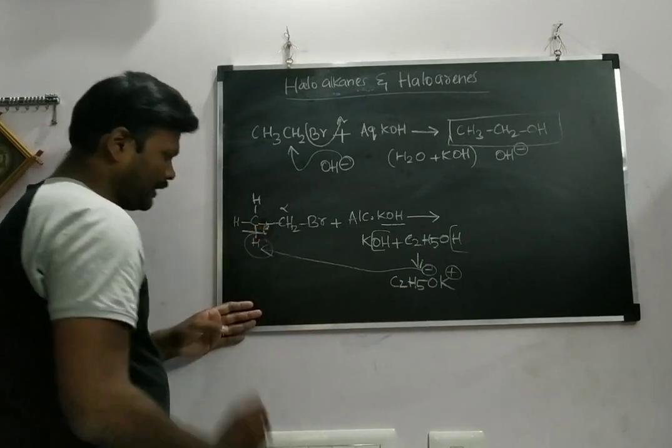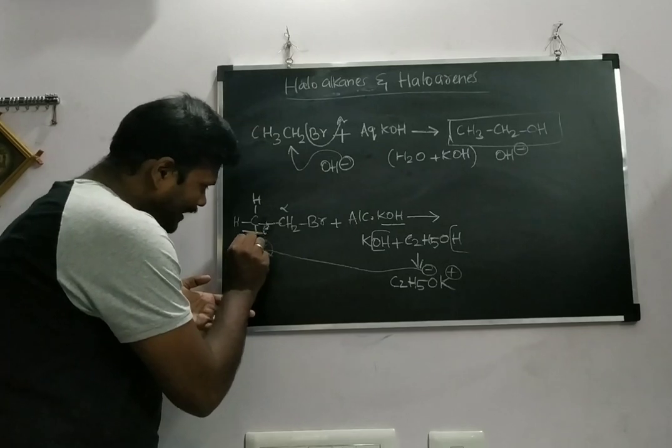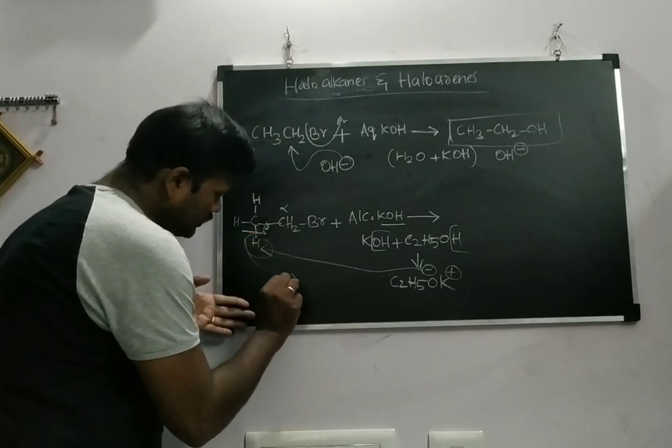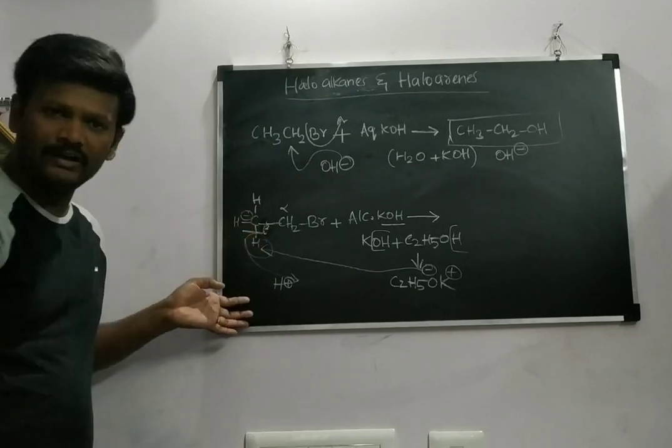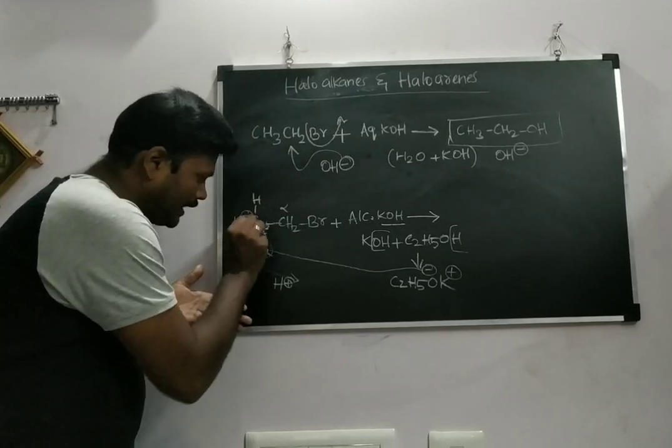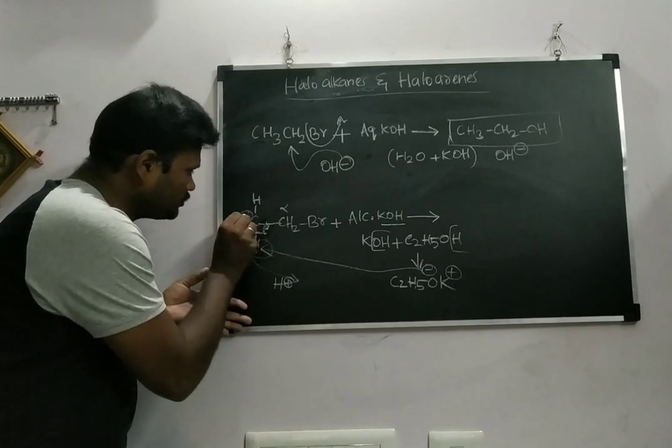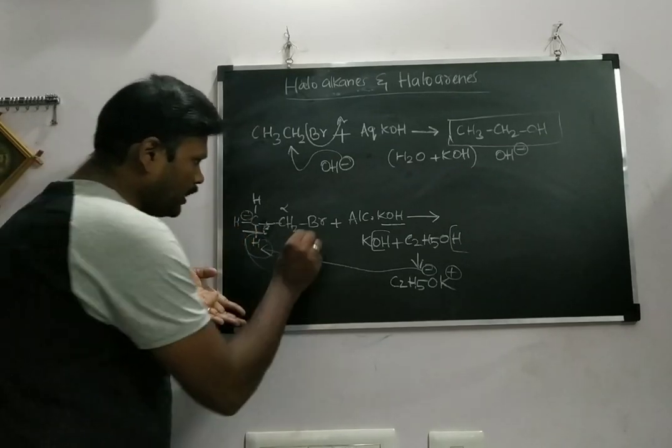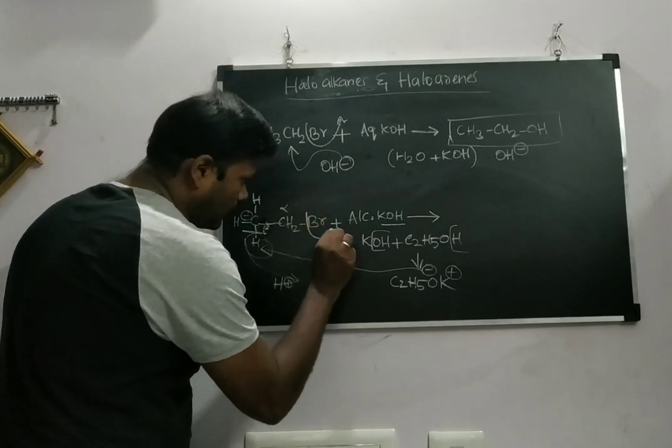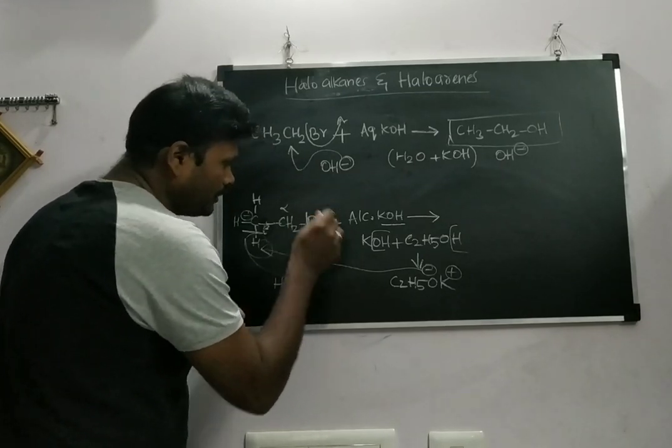The beta hydrogen can be plucked by this conjugate base, that strong base. Now what happens? This bond is getting broken, it goes as H+, leaving a negative charge on this carbon. The Br- will want to stabilize the compound, so it can move on its own.